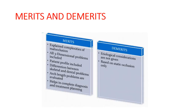The merits of Ackerman-Proffit's classification are: it explains the complexity of malocclusion by considering all three planes; three-dimensional problems are included; patient profile is included; it differentiates skeletal from dental problems; arch length problems are evaluated; and it aids in complete diagnosis and treatment planning. The demerits are that etiological considerations are not given — the exact cause of malocclusion is not considered — and it is based on static occlusion only.